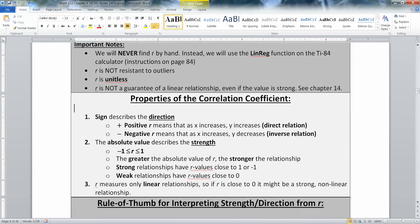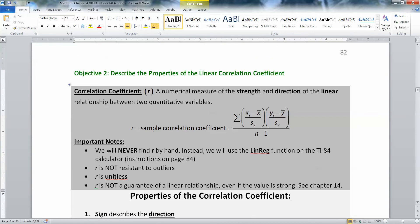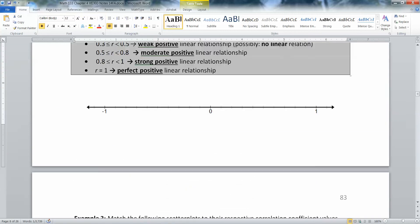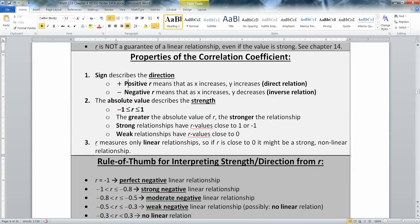So let's think about R for a minute. R is obviously extremely important. So what are its properties? First of all, its sign will tell you the direction. If it is positive, then that means it's a positive relationship, a direct relation. If it is negative, that means it's a negative relationship, an inverse relation. It is telling you the direction of the relationship.